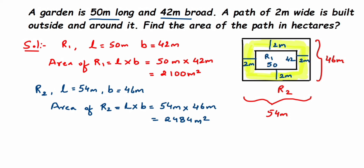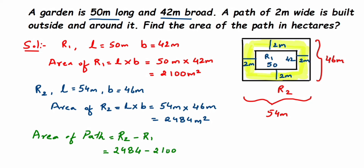To find the area of the path, we subtract the area of the smaller rectangle from the bigger one. Area of the path equals R2 minus R1, so 2484 minus 2100, which gives us 384 square meters.